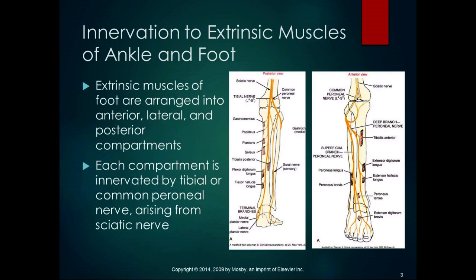The innervation of the extrinsic muscles of the ankle and foot is quite clear-cut and easy to remember. The extrinsic muscles are arranged into anterior, lateral, and posterior compartments — four muscles in the anterior, two in the lateral, three in the deep posterior, and three in the superficial posterior compartments. Each compartment is innervated by either the tibial nerve or the common peroneal nerve, both of which arise from the sciatic nerve, making it easy in terms of nerve roots since they're all the same.